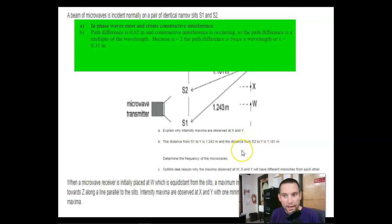Frequency. Alright. So, we know the path difference is 0.62 meters just by subtracting the small one from the big one. And constructive interference is occurring. So, the path difference has to be a multiple of the wavelength. In this instance, because N equals 2, W is 0, 1, 2. The path difference is twice a wavelength, or lambda equals 0.31 meters.